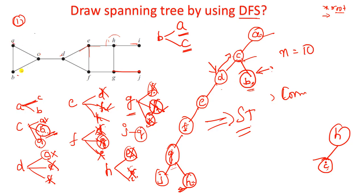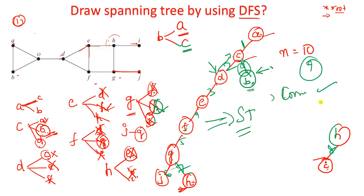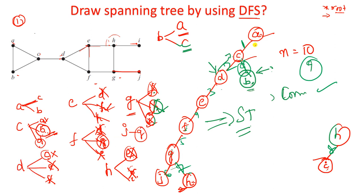Check if 9 edges are there: 1, 2, 3, 4, 5, 6, 7, 8, 9 - yes, 9 edges are there. So our spanning tree is correct. Like this you have to construct spanning trees with the help of DFS. Now we will see another example.